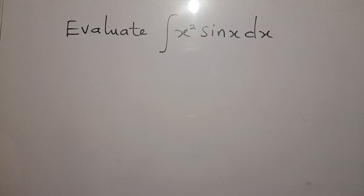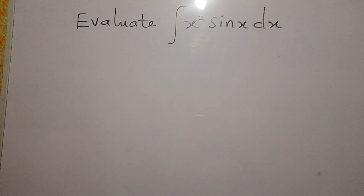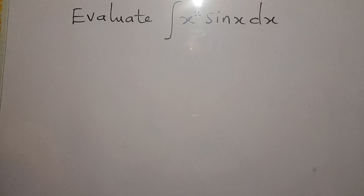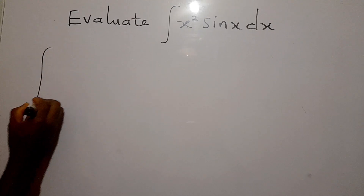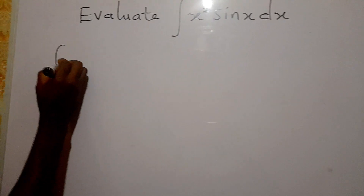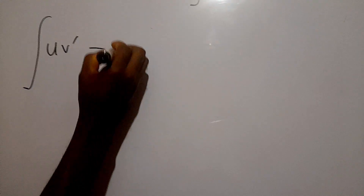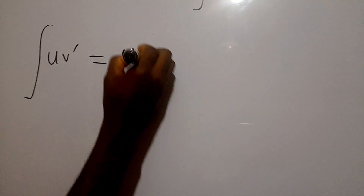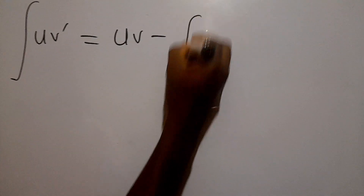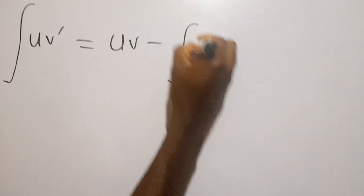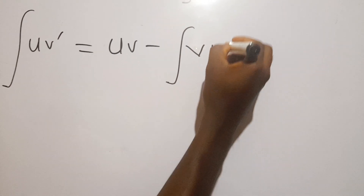So integration by parts comes in to solve the problem. With integration by parts, we say the integral of u v prime is equal to u v minus the integral of v u prime.